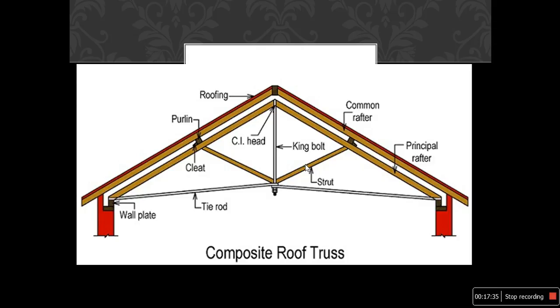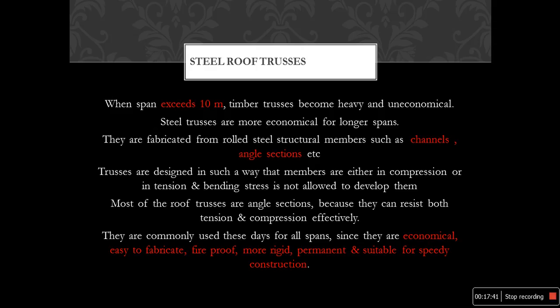Steel roof trusses are used when the span exceeds 10 meters, as timber trusses become heavy and uneconomical and the cost is high. Steel trusses are economical for longer spans and are fabricated from rolled steel structural members such as channels and angle sections. Trusses are designed so that members are either in compression or tension; bending stresses are not allowed to develop. Most roof trusses use angle sections because they can resist both tension and compression effectively.